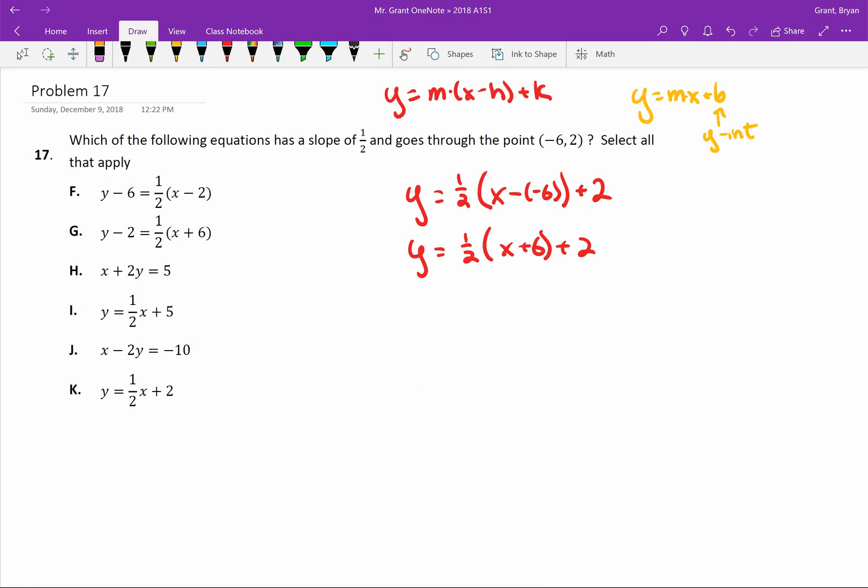So to get y by itself here, we just need to add six to both sides. And so when I add six to both sides, I get this. One-half x minus two plus six. And that doesn't match my equation. Agreed so far? Now it could still be an answer, so we're going to come back to that later on. But it doesn't seem to match so far. So I'll just put a question mark next to it and we'll come back.